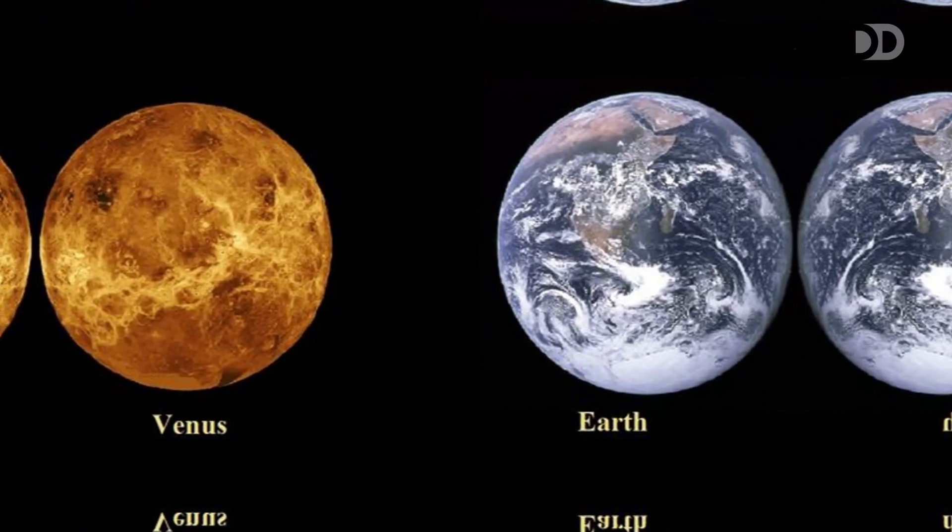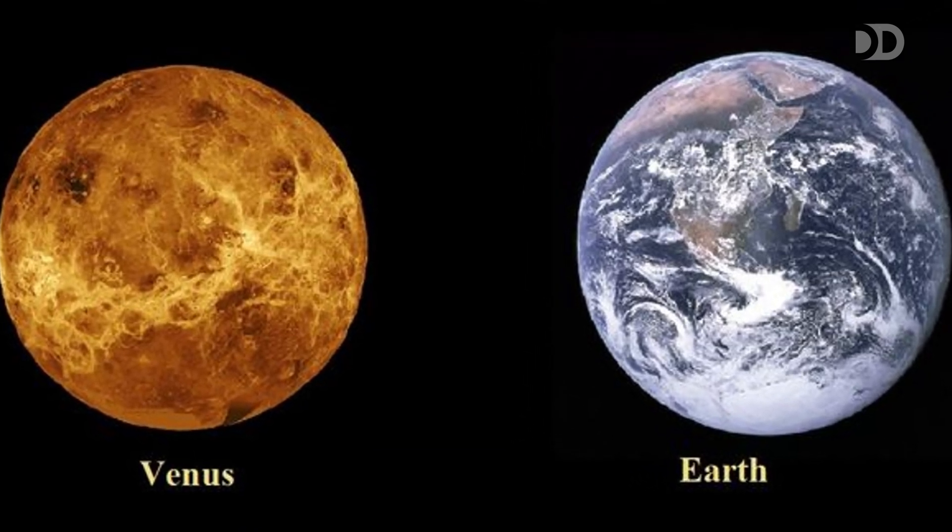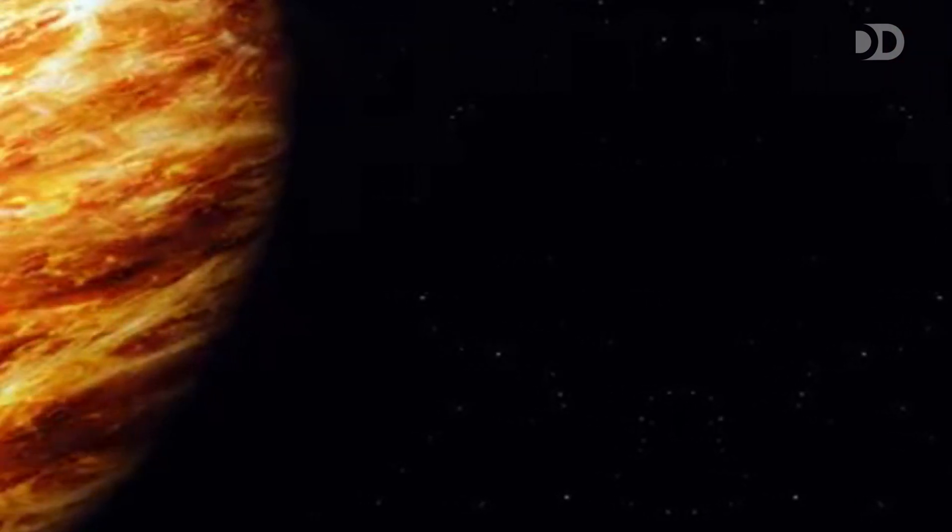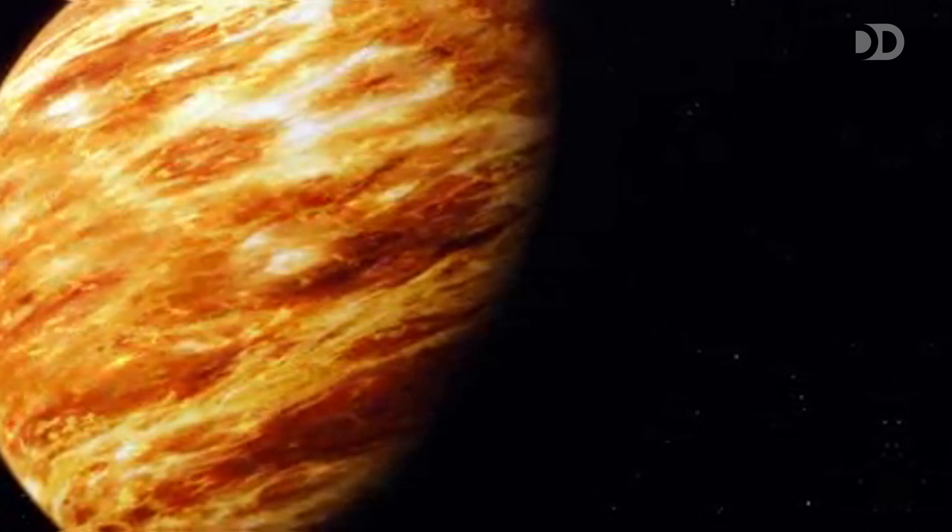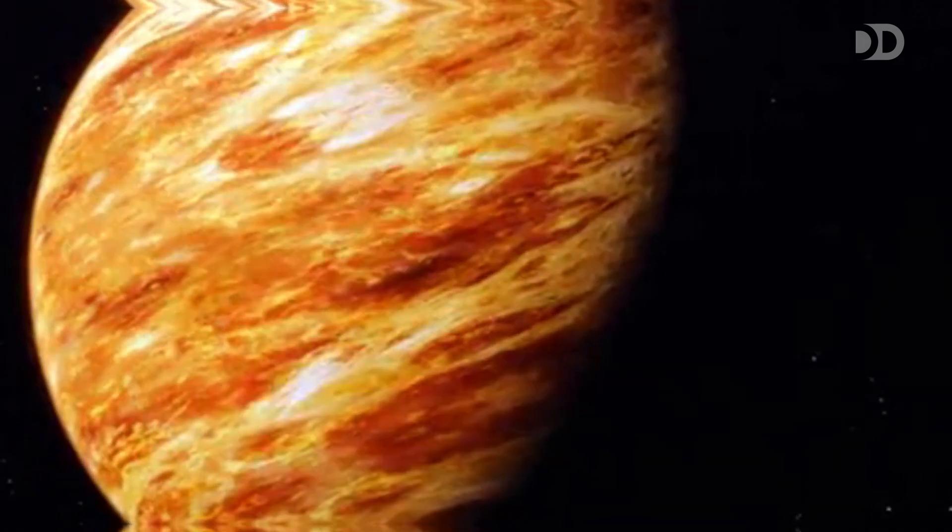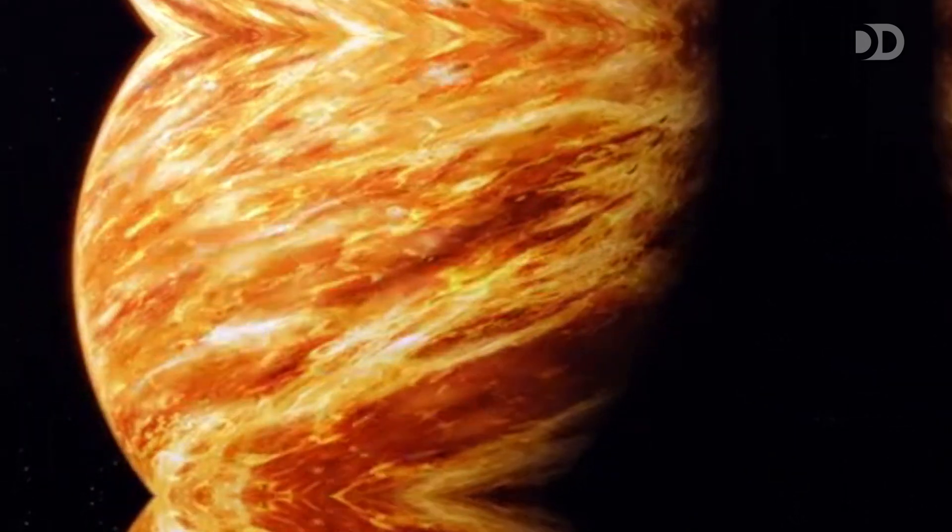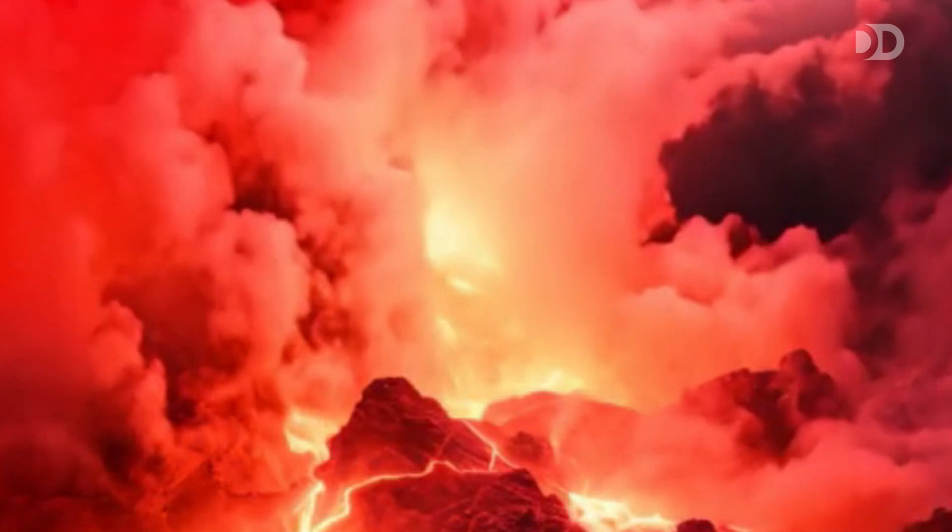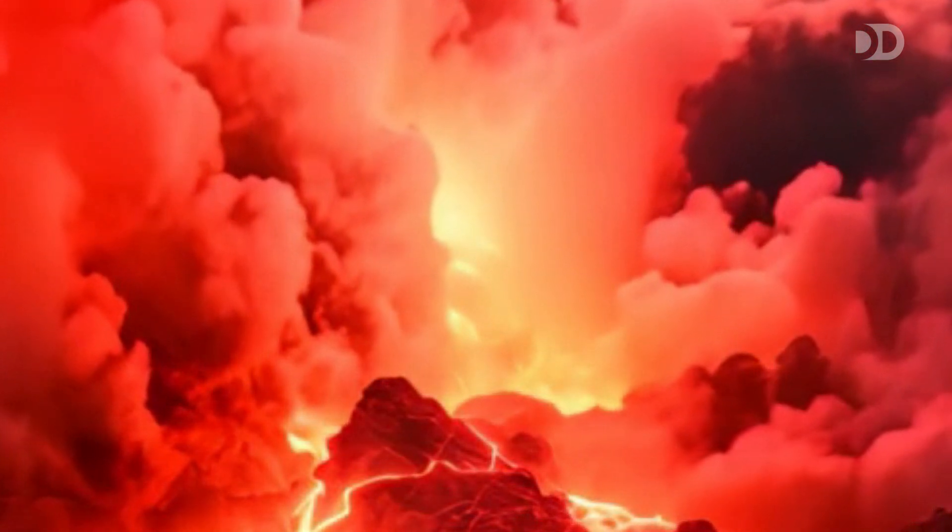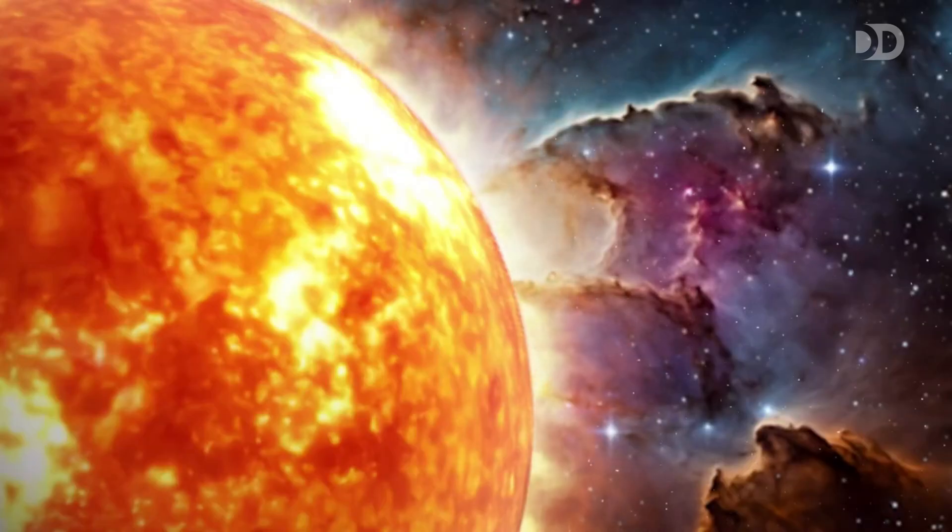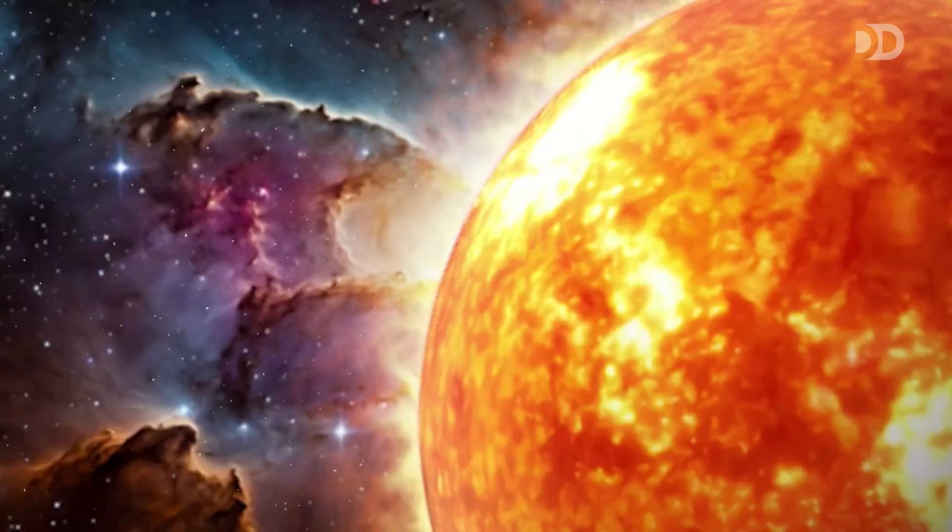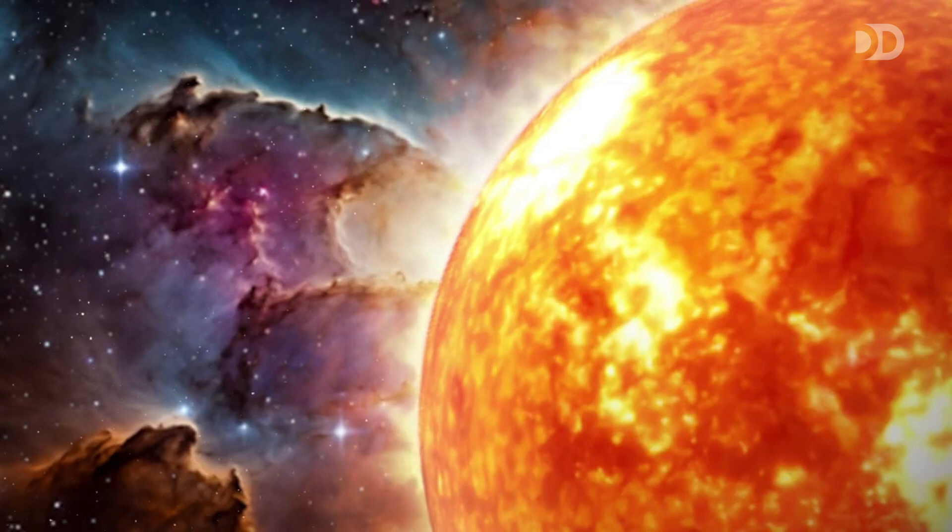Though similar in size and composition to Earth, Venus is a cautionary tale of a planet gone awry. While Earth teems with life, Venus has evolved into a hostile environment, shaped by forces that have transformed it into one of the most extreme places in the solar system. Its thick, toxic atmosphere is composed mostly of carbon dioxide, with clouds of sulfuric acid swirling high above the surface. This dense blanket traps heat in a runaway greenhouse effect, making Venus the hottest planet in our solar system, even hotter than Mercury. Surface temperatures soar to a staggering 900 degrees Fahrenheit, hot enough to melt lead and destroy most spacecraft within hours.